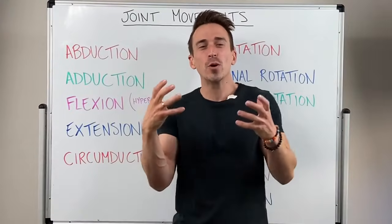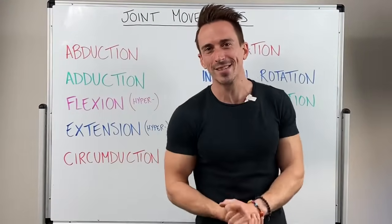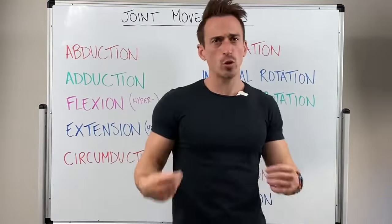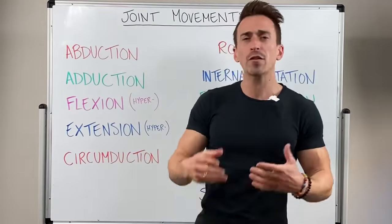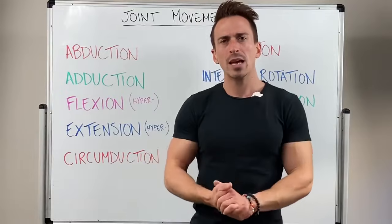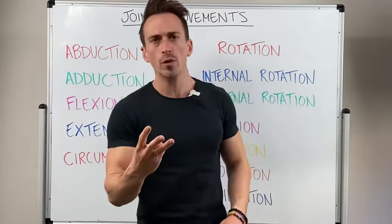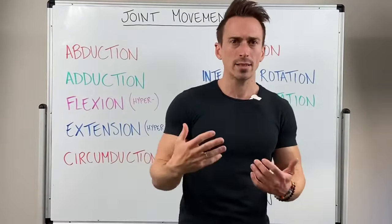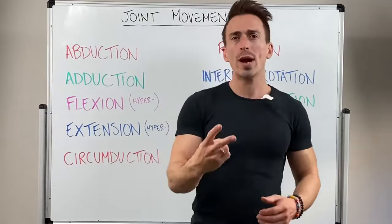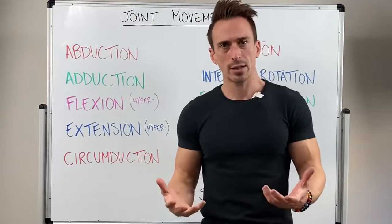Hi everybody, Dr. Mike here. In this video we're going to go through joint movements. The first thing we need to start off with is that different types of joints in the body have different degrees of freedom when it comes to their joint motion. There are only three axes in which a joint can move. If a joint moves in one axis, it's called uniaxial. If it's two axes, it's called biaxial. And if it's three, it's multiaxial.